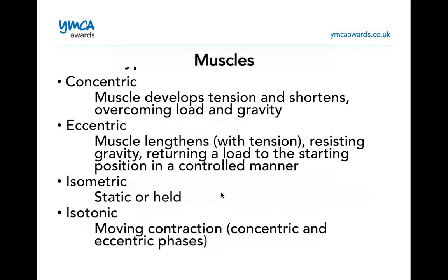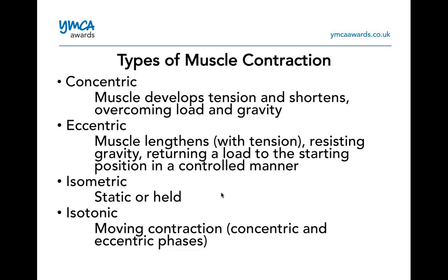Different types of muscle contractions will come up in your exam. Concentric: the muscle develops tension and shortens, overcoming load and gravity — I think of it as contracting the muscle, so it's getting shorter. Eccentric is when the muscle lengthens while resisting the load. Eccentric is quite common with muscle tears and micro-tears of the muscle fibres, which is associated with DOMS — delayed onset muscle soreness.